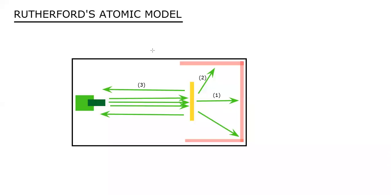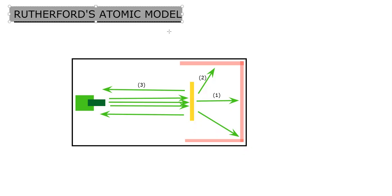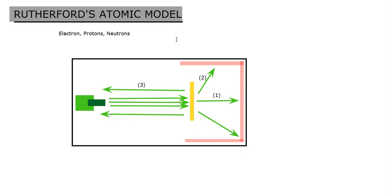Students, today's topic is Rutherford's Atomic Model. This was the first model that was introduced for an atomic model — there was no model before this. At this point, there was no clear information about electrons, protons, and neutrons. These were all question mark things.